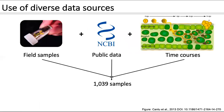But we haven't just used those — we've used some diverse data sources. Alongside those field samples, we've taken any data associated with a peer-reviewed publication available in the SRA, and some infection time courses that have been performed and published by the lab. This has ended up with 1039 field samples in the browser. But as anyone who's done RNA-seq knows, comparing results from a dataset of this size is difficult and involves some technical know-how and a lot of small files.